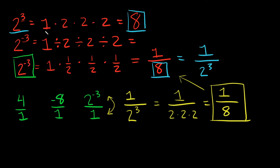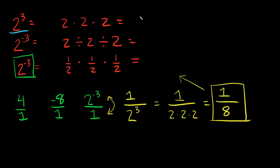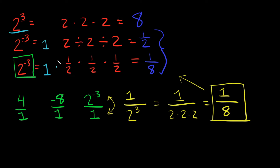In case you're wondering why those 1s are written there — they're very important for the exponents to work. If we just got rid of them, let's redo the answers. 2 times 2 times 2 is still 8. But 2 divided by 2 divided by 2 gives 1/2, not 1/8. And 1/2 times 1/2 times 1/2 is 1/8. These don't match up, which is why we have to add the 1 at the very beginning — that makes all the math work out. The 1 is kind of just hiding there.